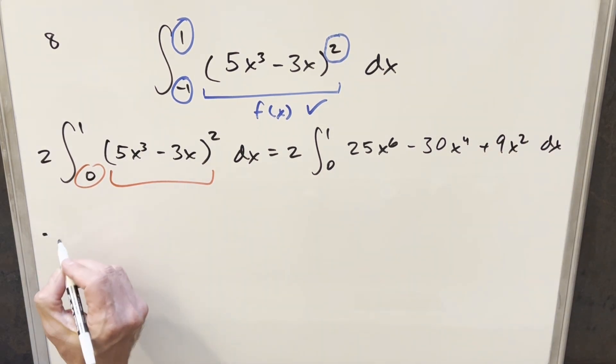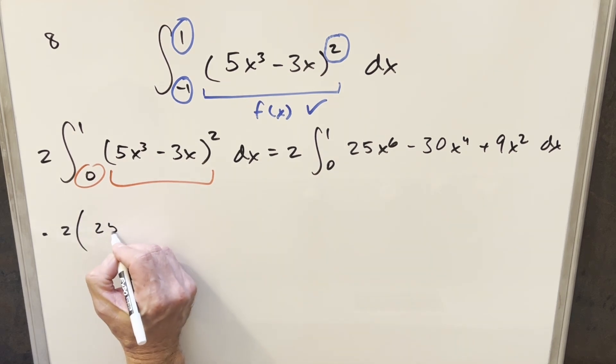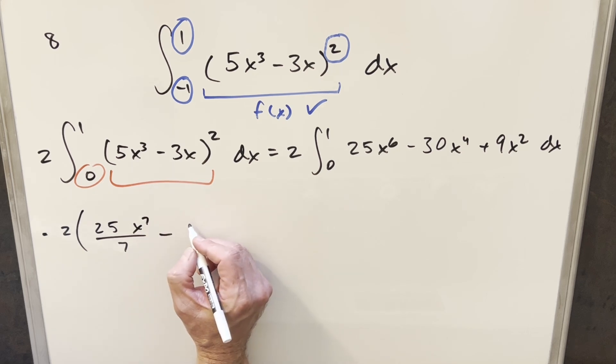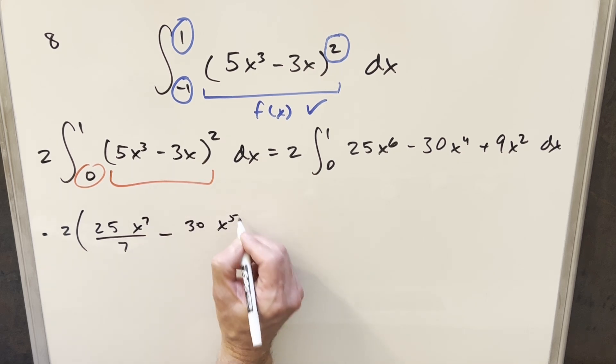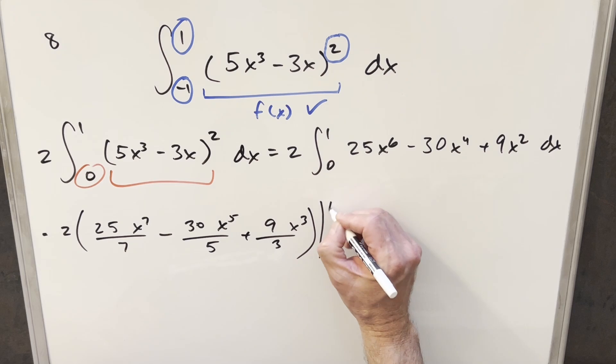And then from here, we'll just go ahead and use power rule. So what we're going to do is we'll have our 2 up front. This is going to become 25x to the 7 over 7. Here, this is going to become minus 30x to the 5th over 5. And then here, this is going to become 9x cubed over 3. And this whole thing is going to be evaluated just from 0 to 1.